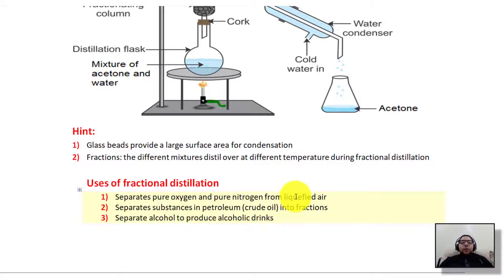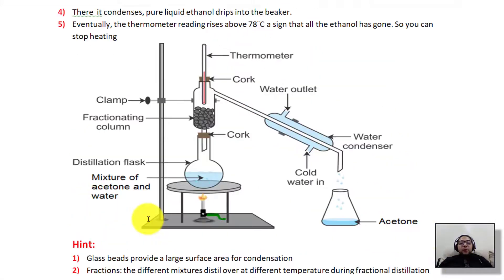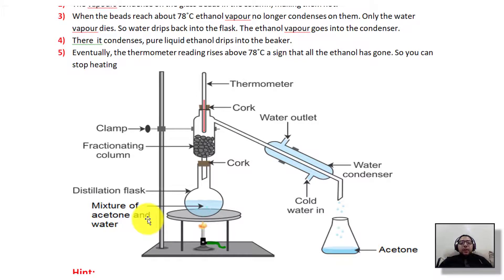The uses of fractional distillation include: separating pure oxygen and pure nitrogen from liquefied air — we cool the air to minus 200°C then heat it at different temperatures, separating each gas at each stage. It is also used to separate substances in petroleum or crude oil into products such as gasoline, petrol, natural gas, and coal. Additionally, it is used to separate alcohol to produce alcoholic drinks.